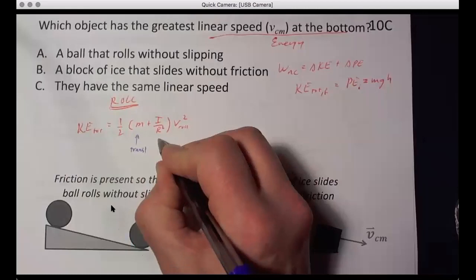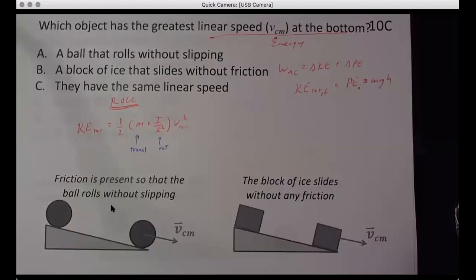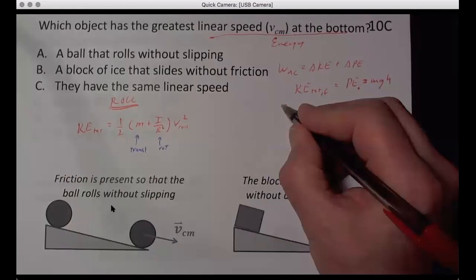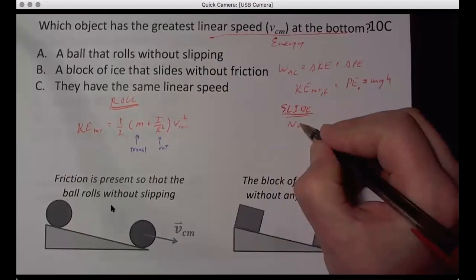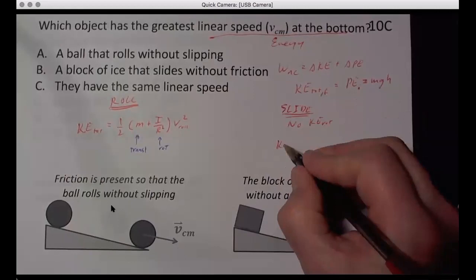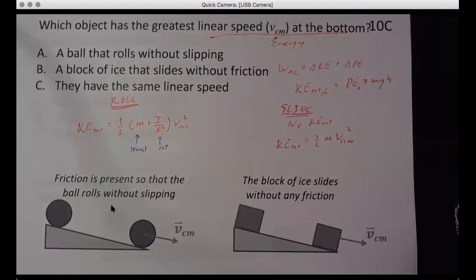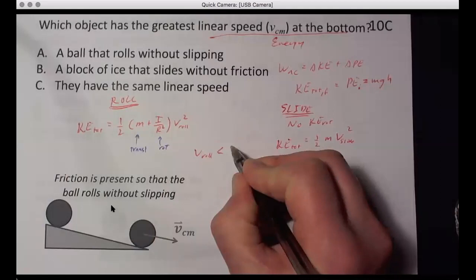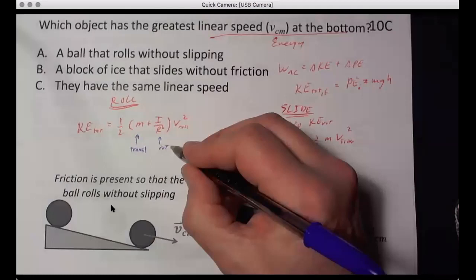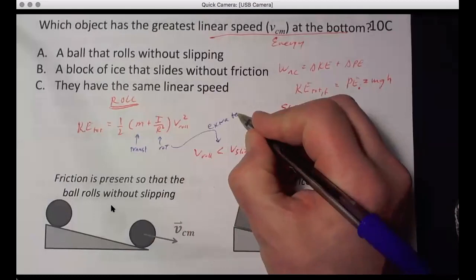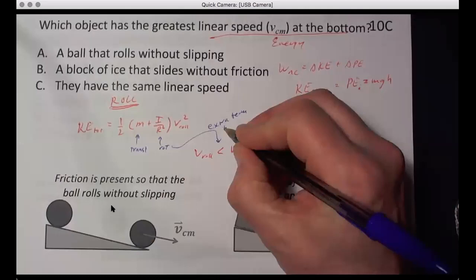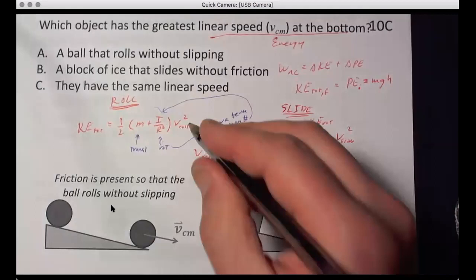I put them in the same terms of omega squared. And then over here, slide has no KE rotation. And so KE total is simply one half M V slide squared. Well, because there's two terms here, V roll is less than V slide because of the extra term. It's a bigger number. It's a bigger number that's multiplying it. Bigger number here, so it has to be the other one multiplying has to be smaller because equal to the same thing.